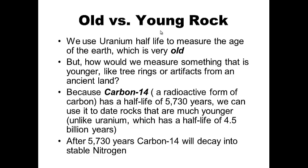Old versus young rock: we use uranium's half-life to measure the age of the earth, which is very old. But how do we measure something younger, like tree rings or pottery from an ancient civilization? Because carbon-14, a radioactive form of carbon, has a half-life of about 5,730 years, we can use it to date younger rocks, pottery, and other materials — unlike uranium with its half-life of 4.5 billion years.